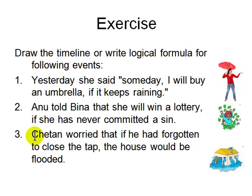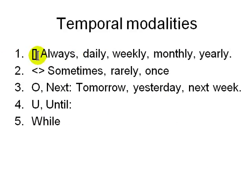Example three: 'Chetan worried that he had forgotten to close the tap and the house would be flooded.' The sentence is already in the past tense — Chetan worried. It's a counterfactual: he doesn't know if it's really true. He's thinking if he forgot to close the tap, the house may be flooded. He's not even sure about the past — so you can have a past in which you're not sure whether something is true or false.